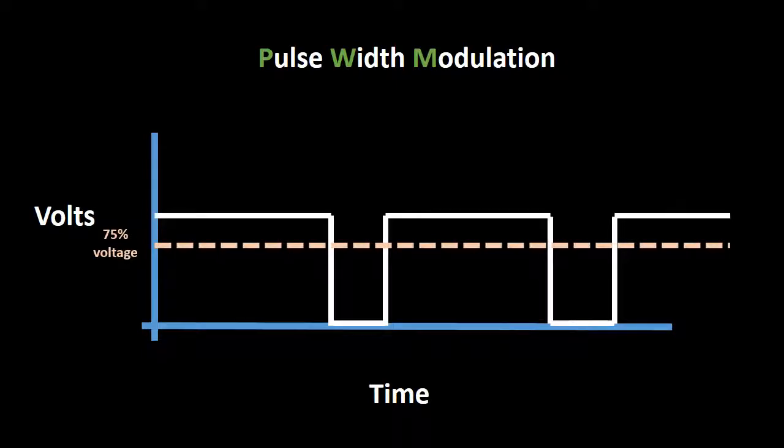By changing the ratio of on time to off time, or pulse width, we change the average voltage output.